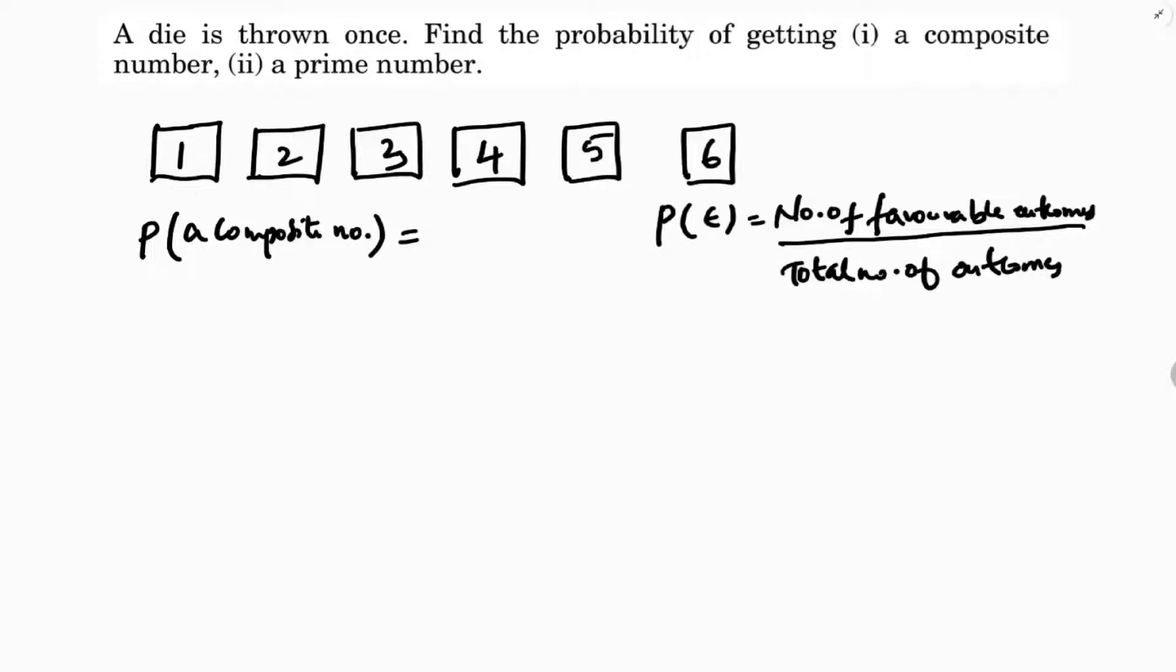Total number of outcomes we have is 6. Now, composite numbers are nothing but numbers other than prime and except 1. See, 1 is neither prime nor composite,